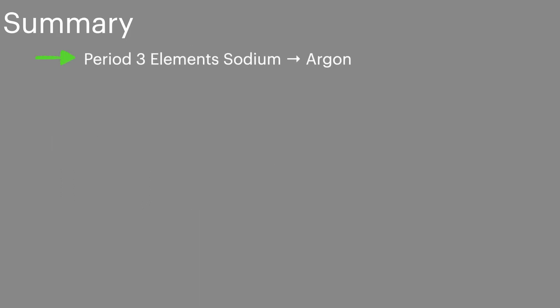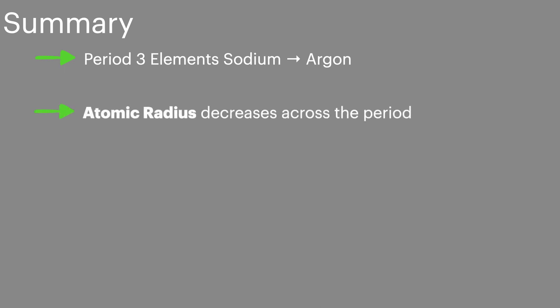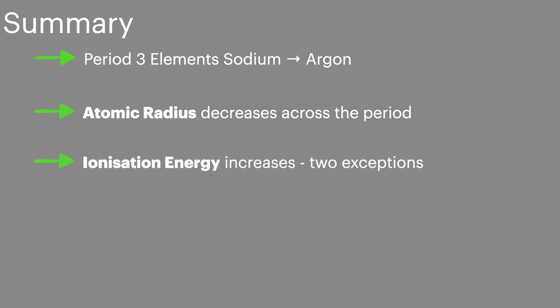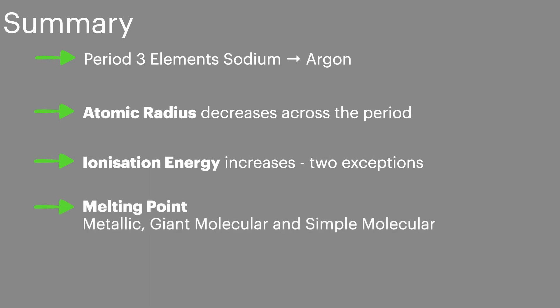In summary, the period 3 elements run from sodium on the left through to argon on the right. Atomic radius decreases as we go across the period. Ionization energy increases as we go across the period, apart from those two exceptions which we've talked about. Melting point depends on whether the element forms metallic, giant molecular or simple molecular structures.